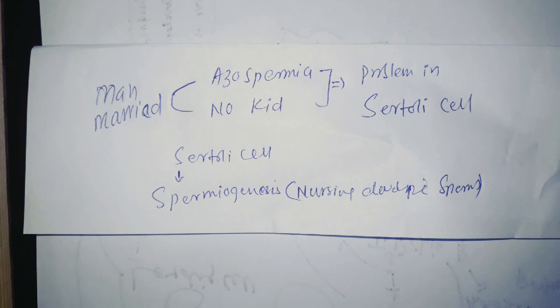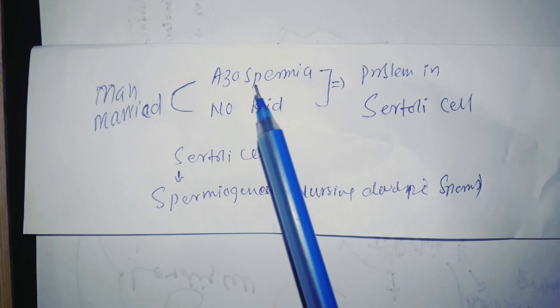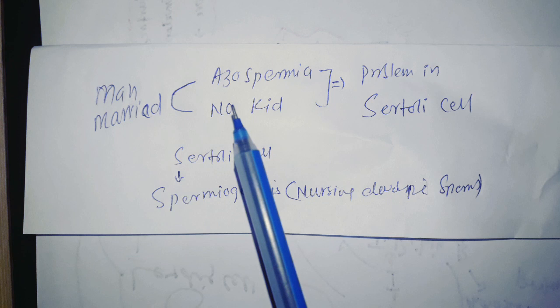Different kinds of MCQs can come from this topic. They will say a tall man or a man with azoospermia, so where is the problem? The problem is in the Sertoli cells. Or they will say a man is married with no kids, where is the problem? That is Sertoli cells, as we know they help in spermiogenesis.